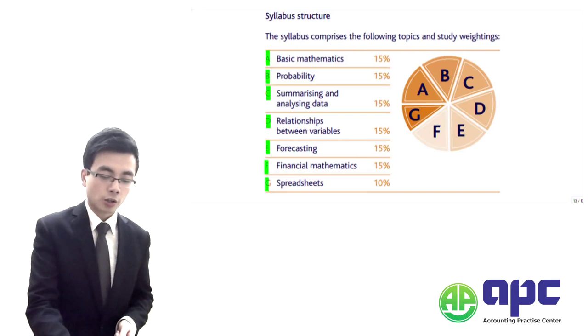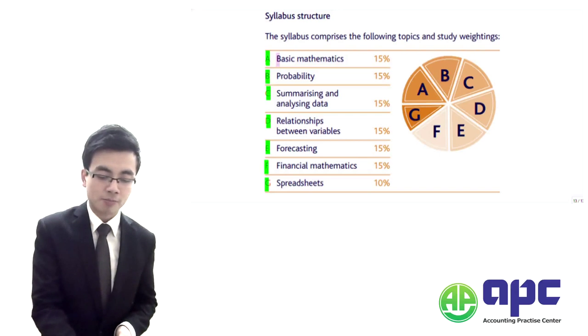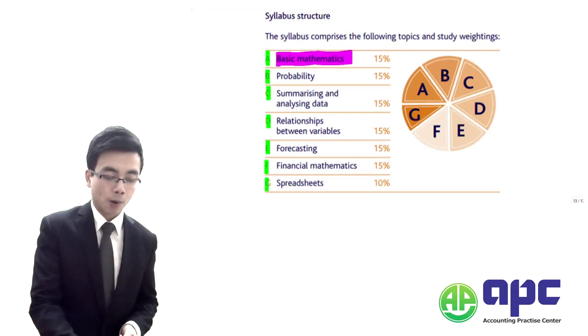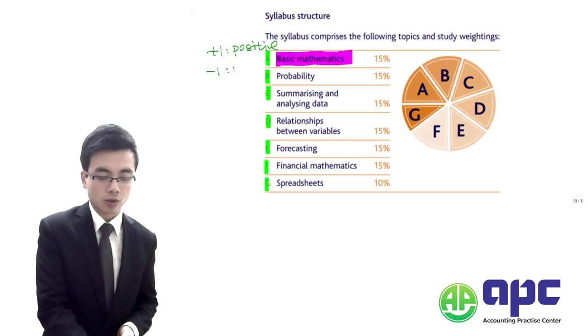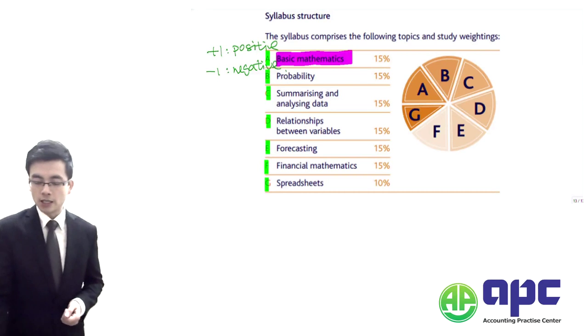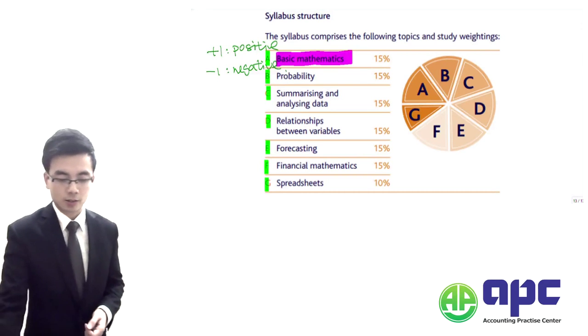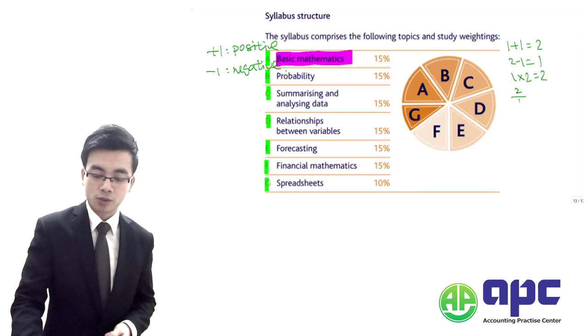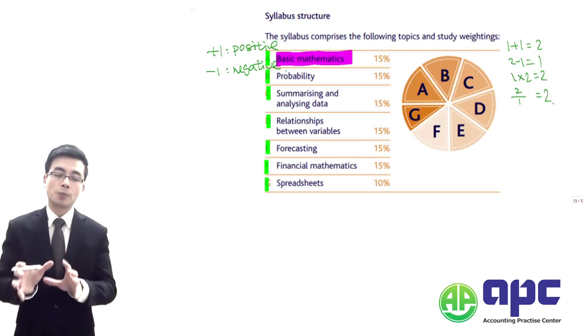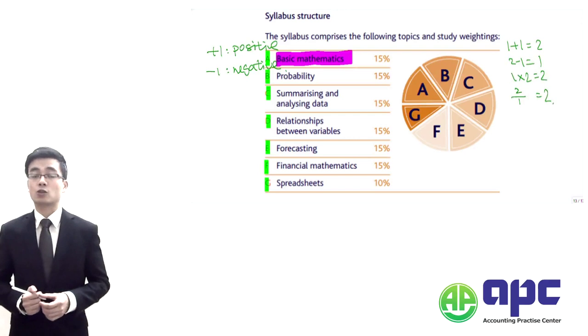So firstly, we're going to look at some of the basic mathematics, such as, for example, +1, and this is called positive. -1, this is called negative. And also we're going to do some of the plus. For example, one plus one equals two, two minus one equals one, one times two giving us two, two divided by one giving us two. So those will be the things included into the section A.